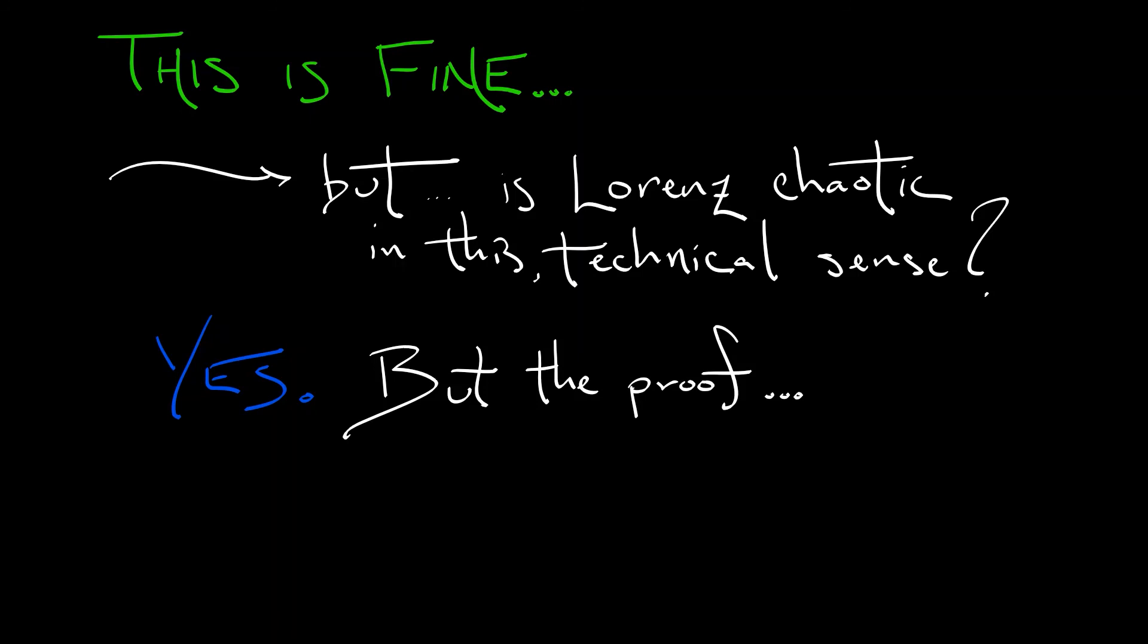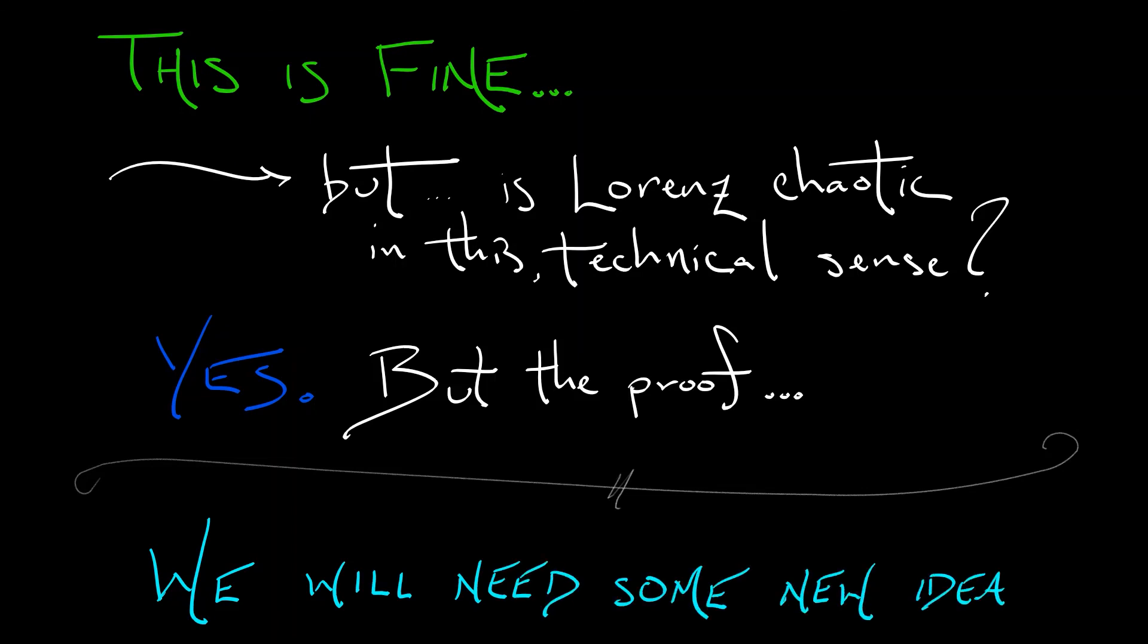Nevertheless, the Lorenz system is chaotic. But if we want to prove that or even give an indication of how our proof would go, we're going to need some new ideas.